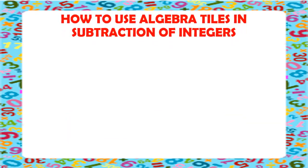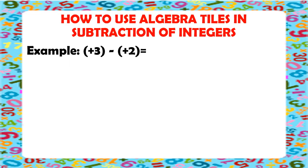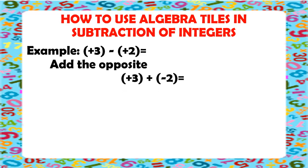Now, I will show you how to subtract integers using the algebra tiles. The first example that we have is positive 3 minus positive 2. When we are subtracting integers, we always add the opposite. So, we just copy down the first integer as is, which is positive 3. Instead of the subtraction sign, we're going to put the addition sign. And then, we're adding the opposite of positive 2, which is negative 2. So, our new equation is positive 3 plus negative 2.